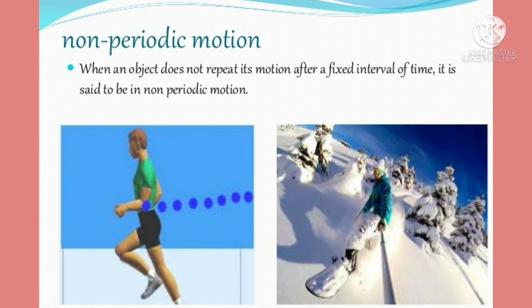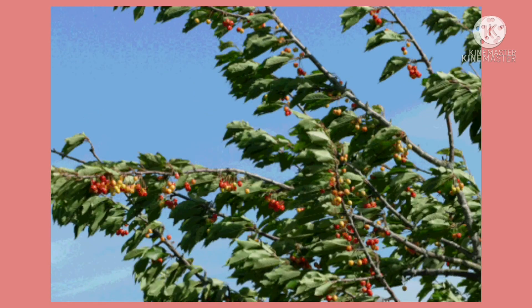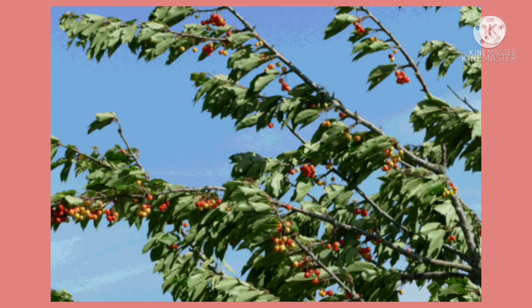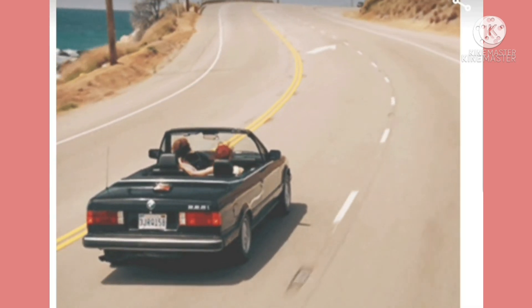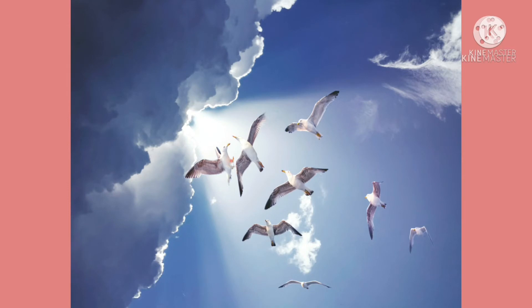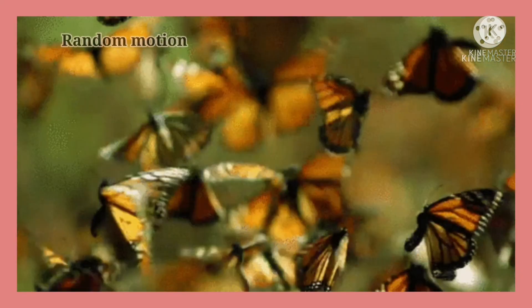Next is non-periodic motion. When an object does not repeat its motion after a fixed interval of time, it is said to be in non-periodic motion. Swaying of the branches of a tree, motion of a moving car, and birds flying in the air are examples of non-periodic motion.